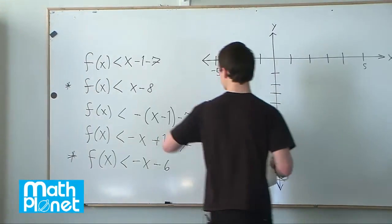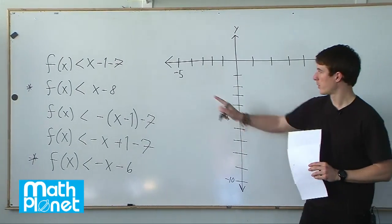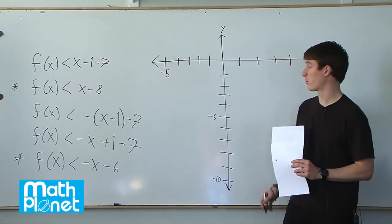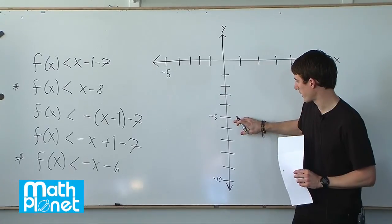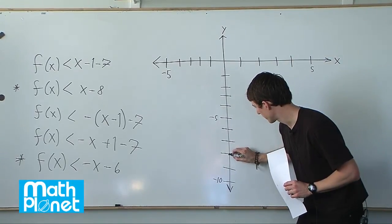So let's start with this one. It's already written in slope-intercept form. We have the intercept of negative 8 and a slope of just 1. So if we go down to negative 8, that's 5, 6, 7, 8. We know we start here.